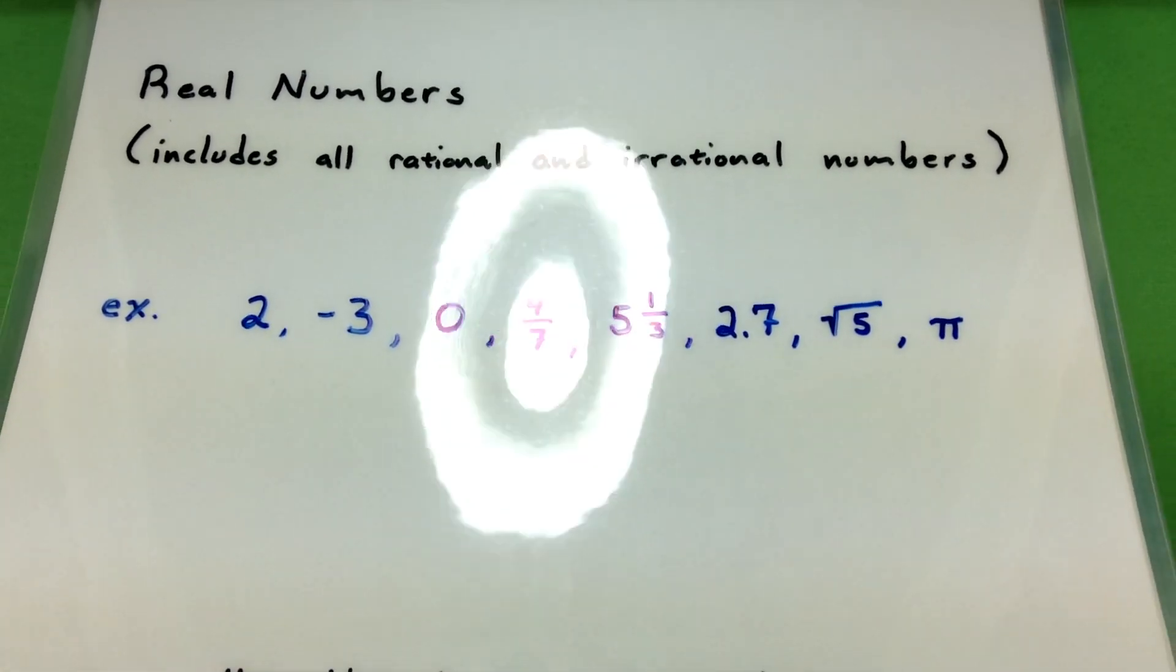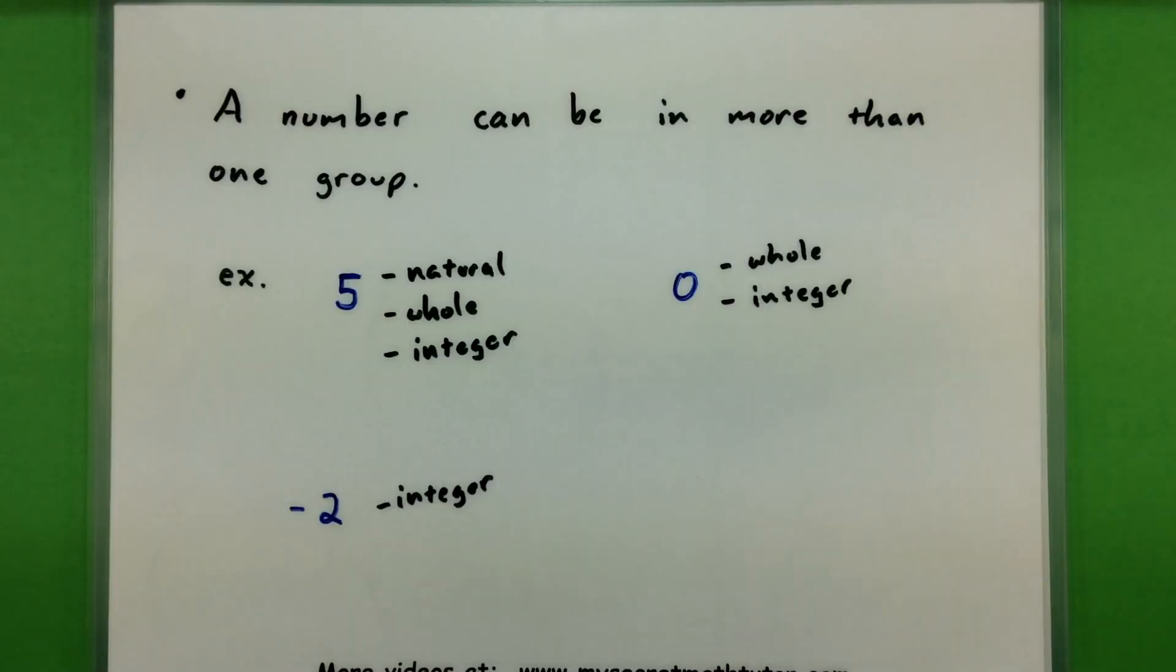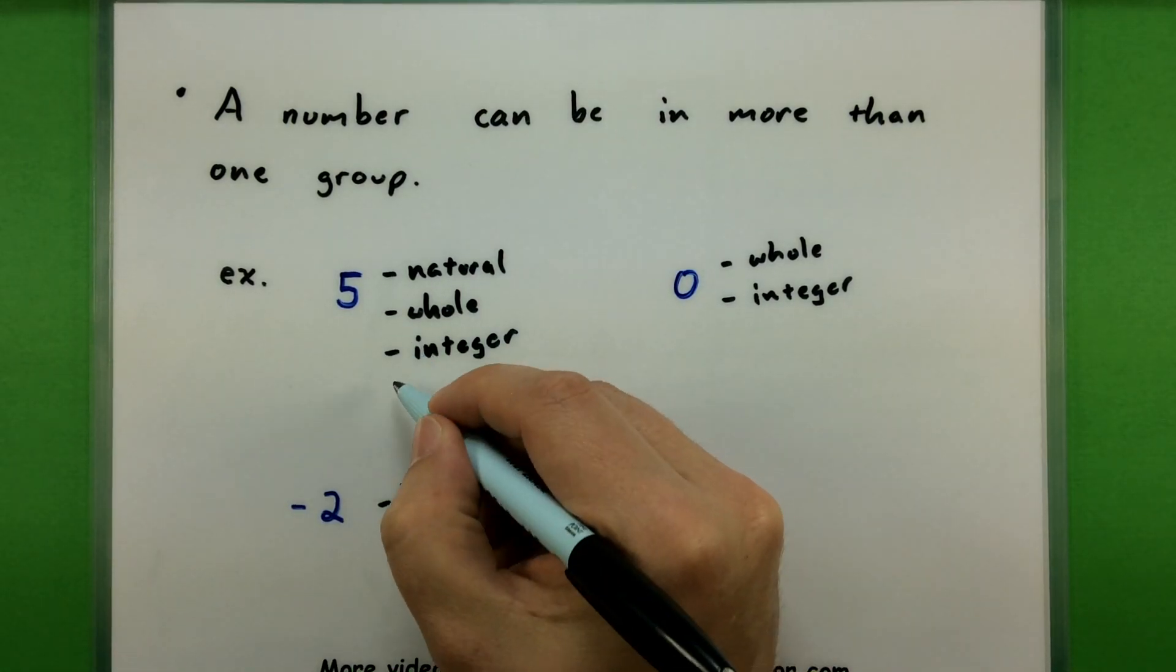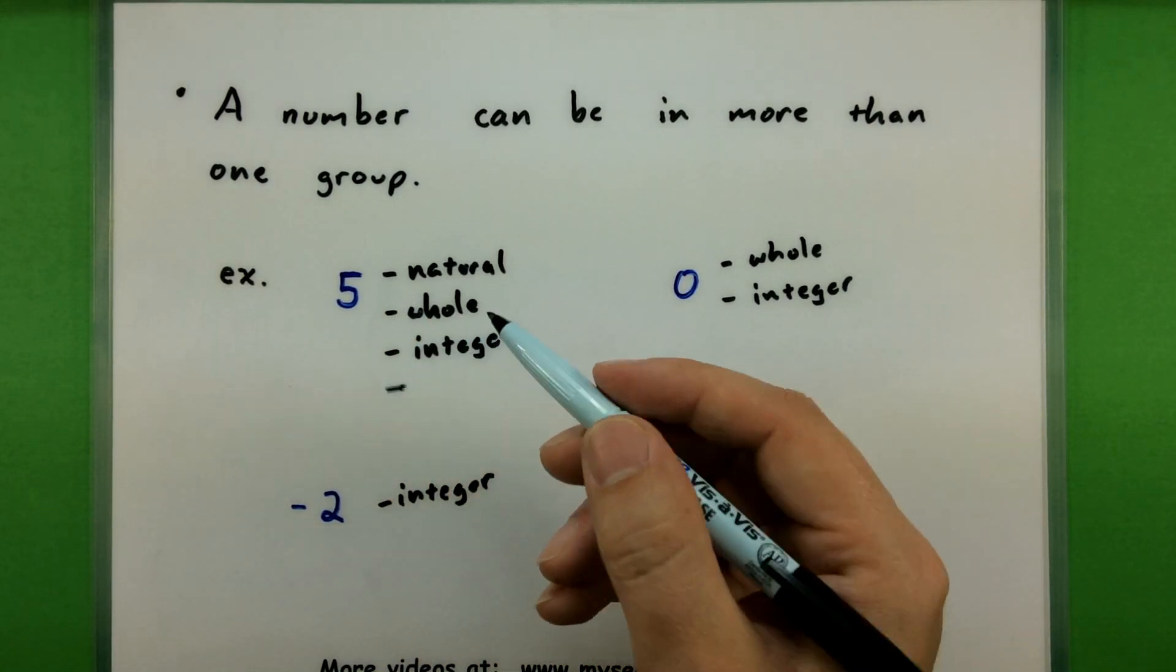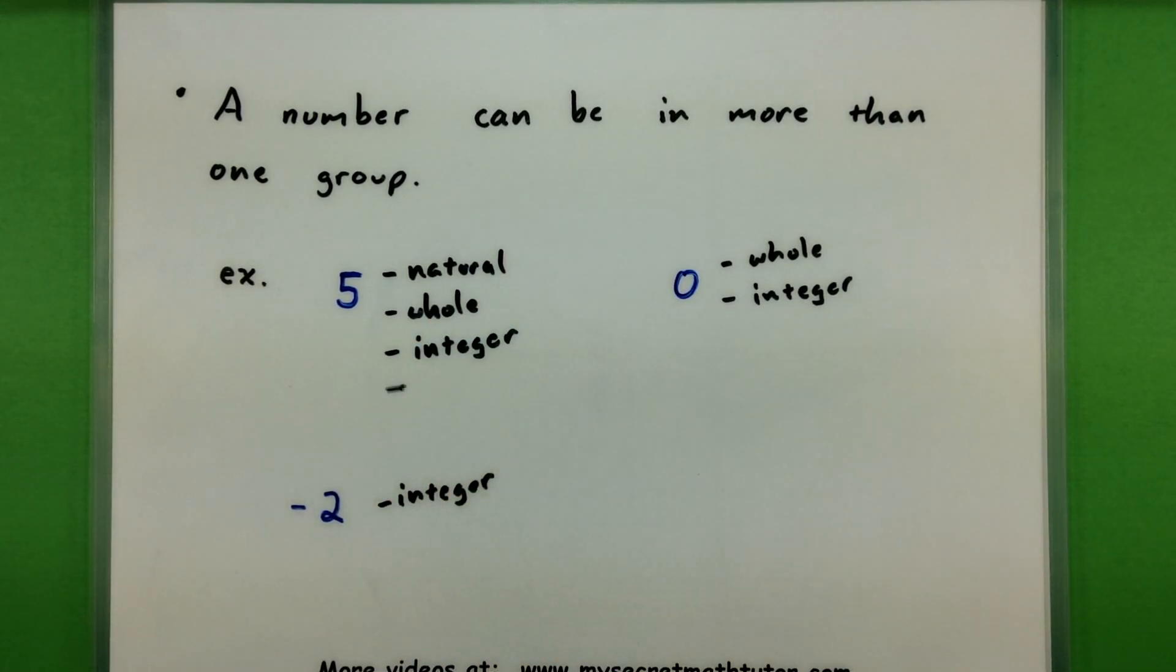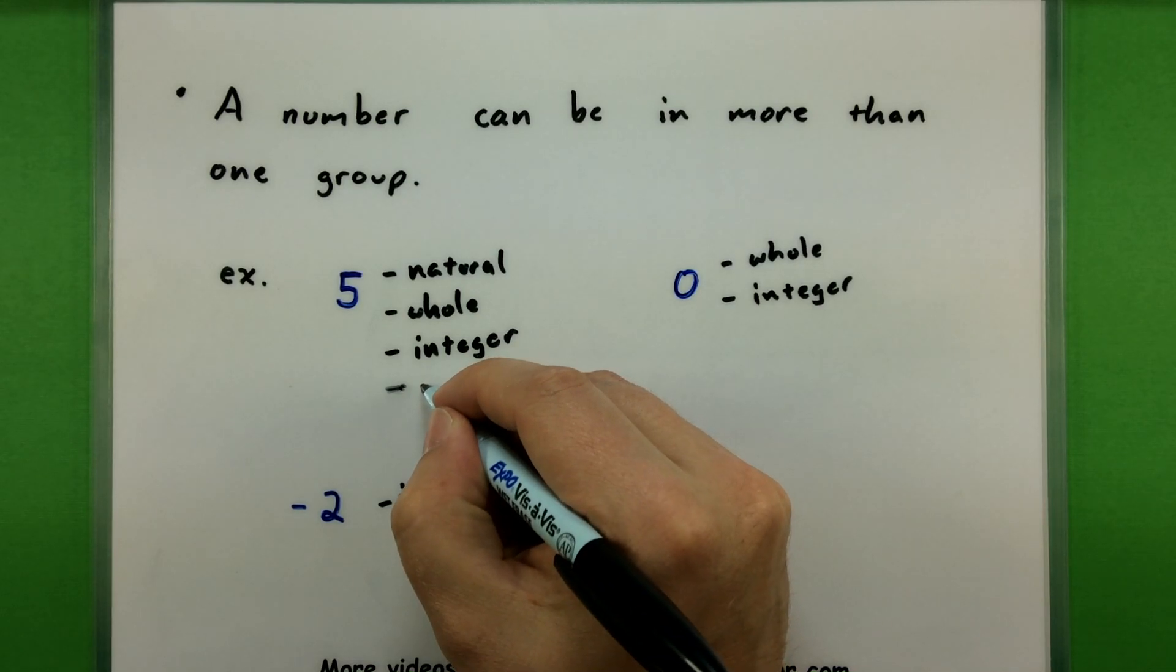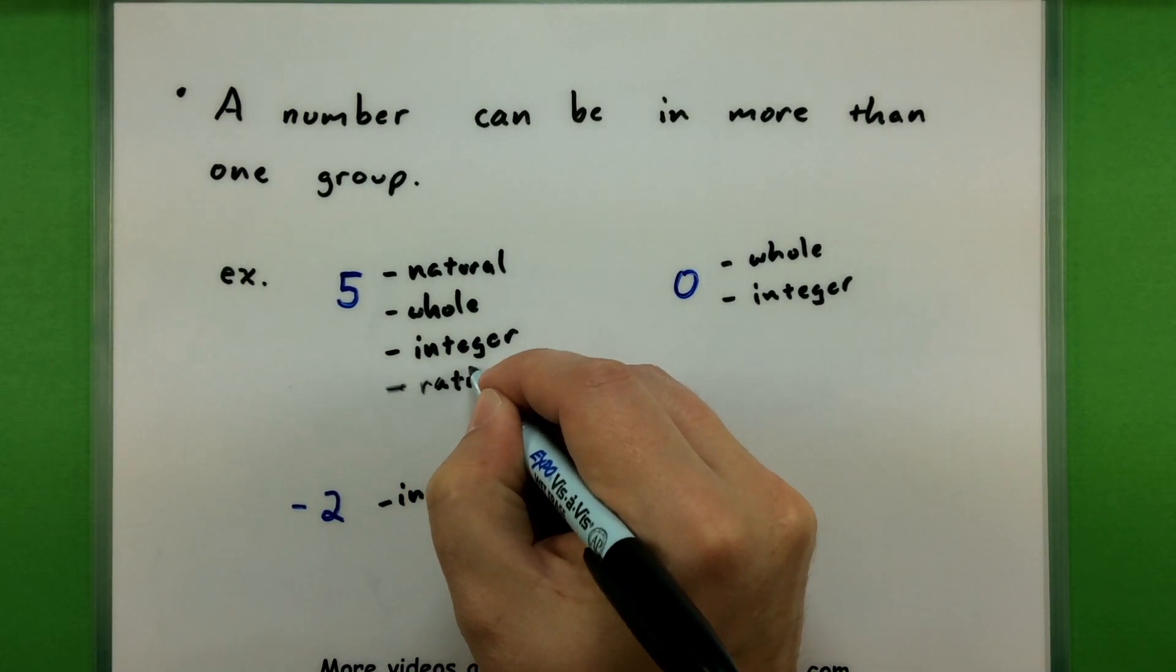Remember that as you're working through these, that a number really can be in more than one group. So now that you know a few more groups, we can actually even expand on these ones and say, yep, not only is 5 a natural number and an integer and a whole number, I can also call it a rational number since it can be written as a fraction. And it is a type of real number.